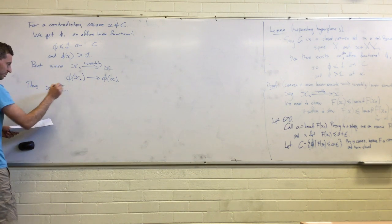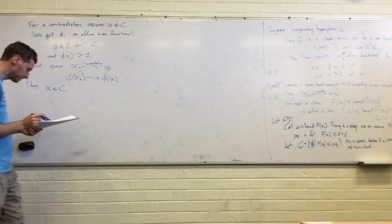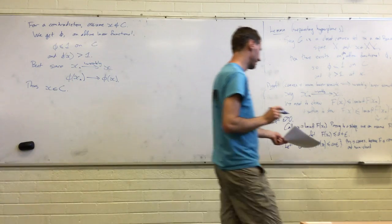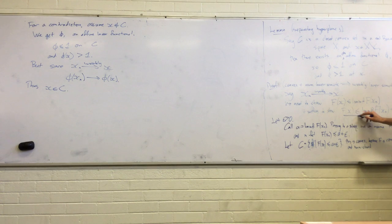And the same applies to affine linear functionals, because they just differ by a constant from linear functionals. So, we've got to have phi(xn) converges to phi(x). And that's now impossible. Okay? Because phi(x) is strictly bigger than one, and all these guys are at most one. But at that point, I think we're basically done. So, x is actually in this set C, and that's exactly the conclusion that we were after. x is in C is just saying that f(x) is at most A plus epsilon.